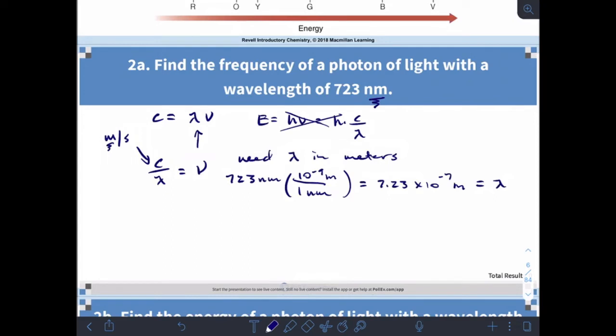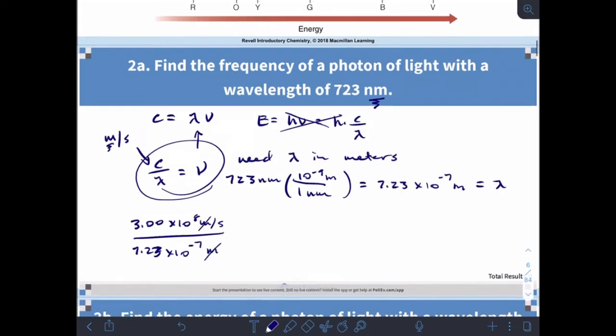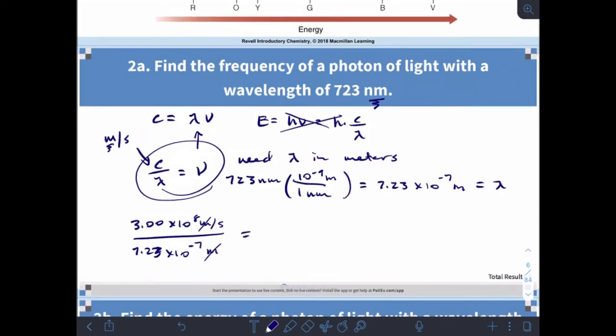Now I can plug that into my equation. C is 3.0 times 10 to the 8 meters per second divided by 7.23 times 10 to the minus 7 meters. My meters cancel out, leaving me with inverse seconds, so we have an answer of 4.15 times 10 to the 14 inverse seconds, or hertz.